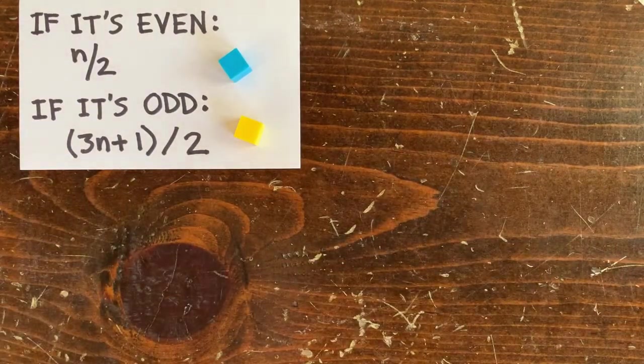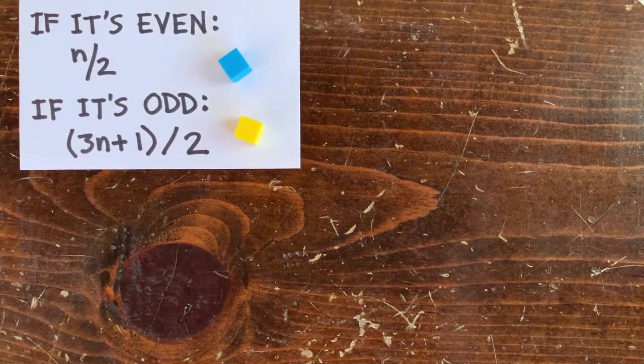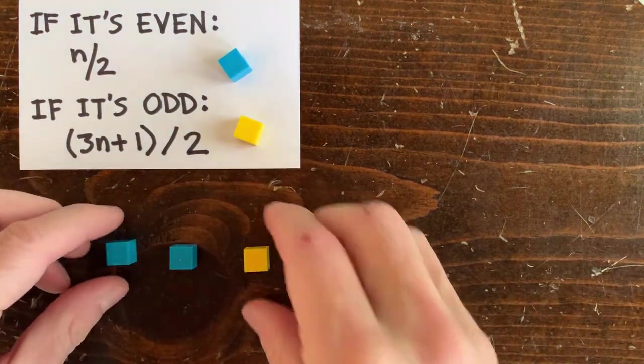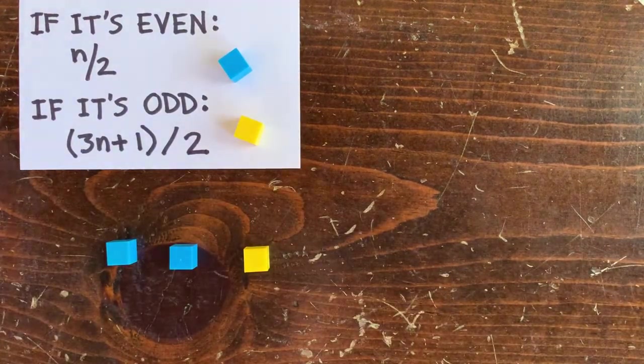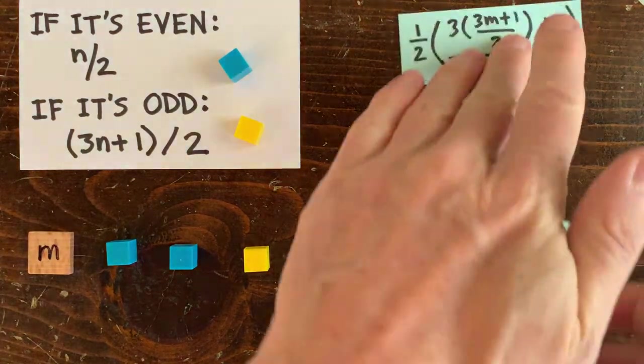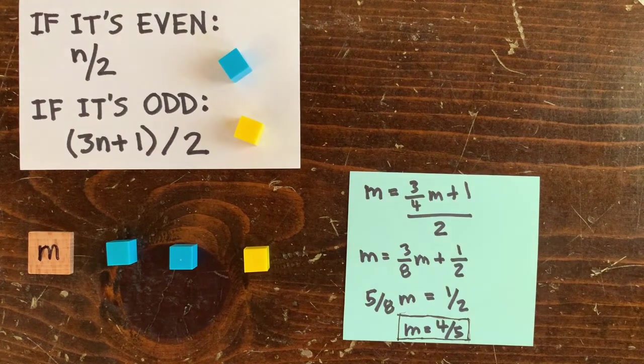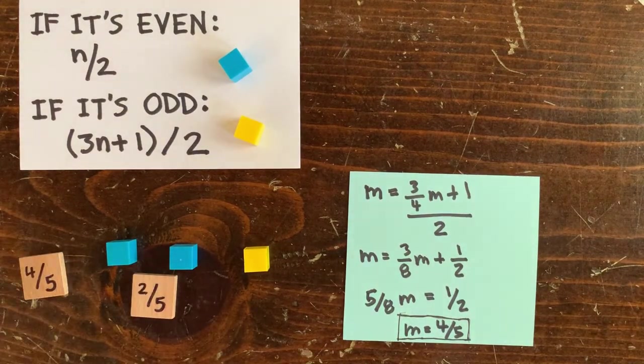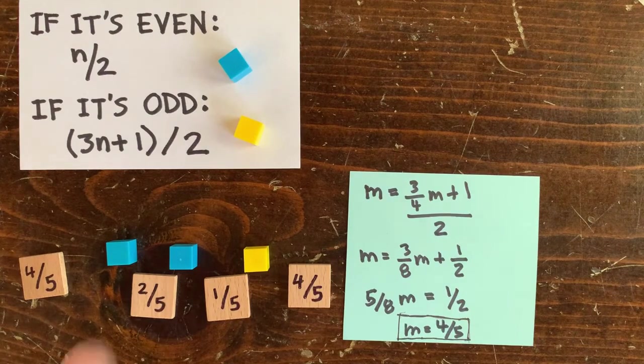Here's another operation sequence: a half followed by a half followed by 3n plus 1 over 2. If we put in m, we get this out, and solving for m, we get m equals 4 fifths. Sure enough, 4 fifths goes to 2 fifths, goes to 1 fifth, then goes back to 4 fifths. But fractions are yuck.